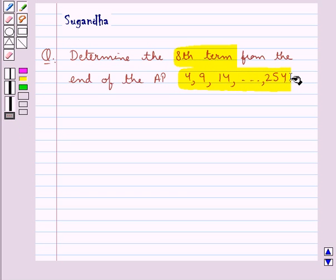4, 9, 14 and so on up to 254. Now we are given one AP and we have to find the 8th term from the end of the given AP.